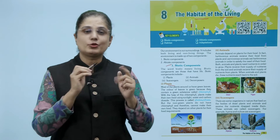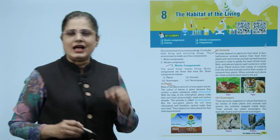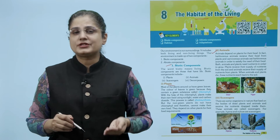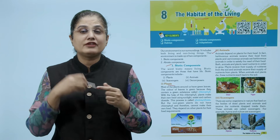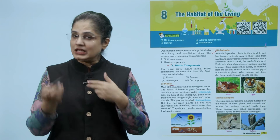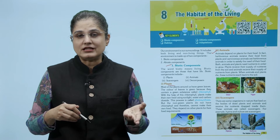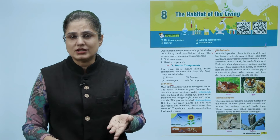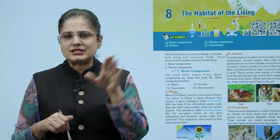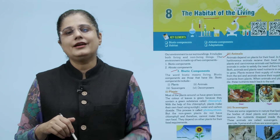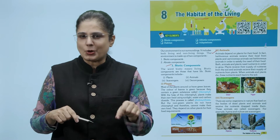Now we come to animals. Animals depend on plants for their food. Herbivorous animals directly eat food or food products from plants to fulfill their requirements. Then there are carnivorous animals which eat the herbivorous animals in order to satisfy their food needs. Both animals and plants need nutrients in order to grow - plants receive their supply of nutrients from the soil, and animals receive their nutrients which eventually return back to the soil.